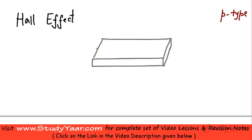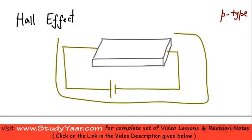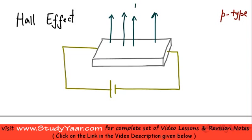Let's say I have this connected to a battery, and due to which the current is flowing along this direction. Now if I keep this semiconductor — in which the current is flowing like this — in a magnetic field which is oriented in this direction, so let's say my magnetic field is like this, then what I would notice is a potential difference develops across this and the other surface which is on the other side.